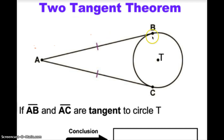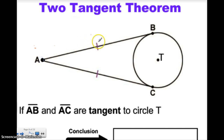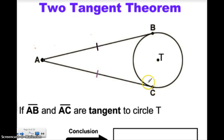The two tangent theorem is basically this. If AB is tangent to circle T, and AC is also tangent to circle T, and they intersect at point A, then I know that AB is going to be congruent to AC. If AB and AC are both tangent to circle T and they intersect at a point, then these two line segments are going to be congruent.